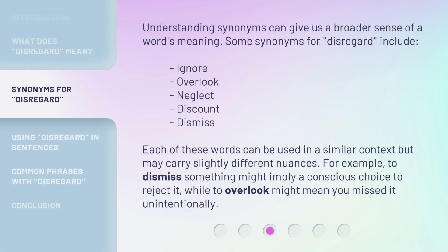Understanding synonyms can give us a broader sense of a word's meaning. Some synonyms for disregard include: ignore, overlook, neglect, discount, dismiss. Each of these words can be used in a similar context but may carry slightly different nuances. For example, to dismiss something might imply a conscious choice to reject it, while to overlook might mean you missed it unintentionally.